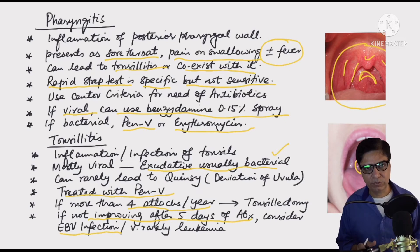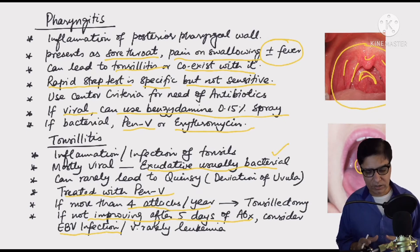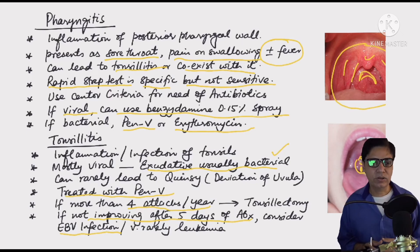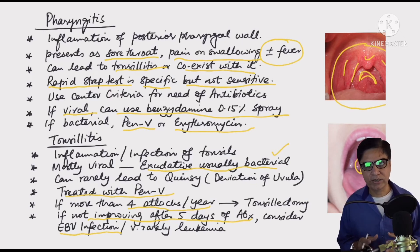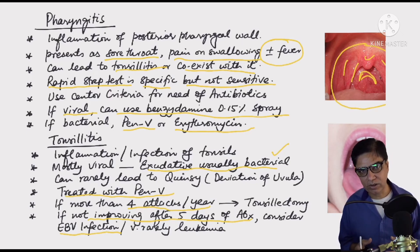Regardless of age, if tonsillitis is not improving, also consider leukemia — leukemic infiltration of the tonsils can cause tonsillitis that doesn't improve because of suppressed immunity. Perform blood tests and possibly a chest X-ray to rule out hilar adenopathy.